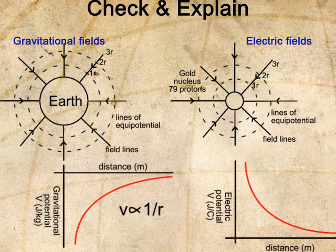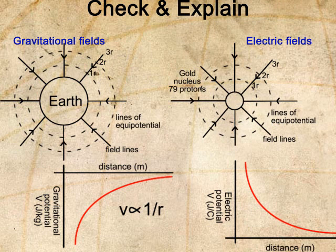If you've plotted the gravitational potential graph the other way up, then you've forgotten the importance of the negative sign.